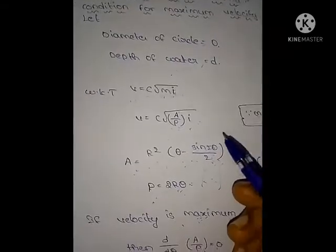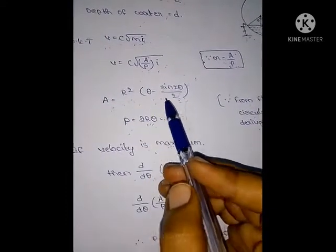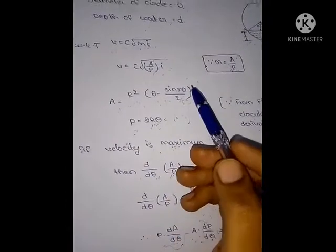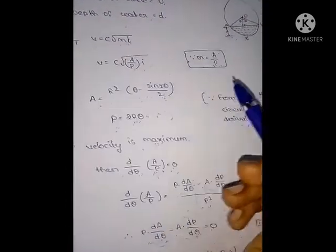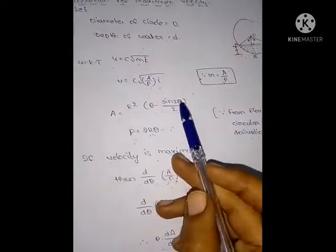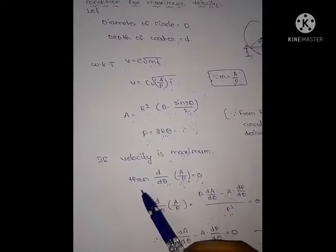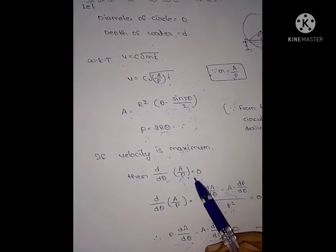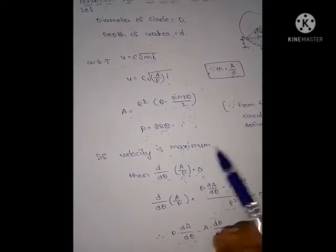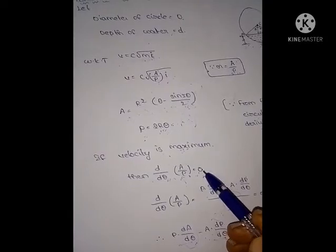Next, we know the area and perimeter formulas: A = R²(θ − sin2θ/2) and perimeter P = 2Rθ. These two formulas were obtained from the flow through circular open channel derivation. If velocity is maximum, then d/dθ(A/P) = 0. This is the condition.